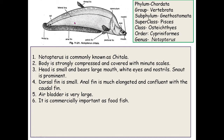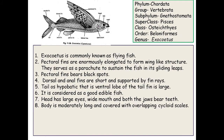The head is small and bears a large mouth, wide eyes, and nostrils; the snout is prominent. The dorsal fin is very small, while the anal fin is much elongated and confluent with the caudal fin. The air bladder is very large, and it is commercially important as a food fish.